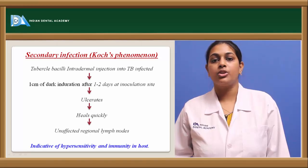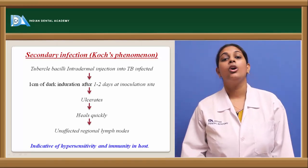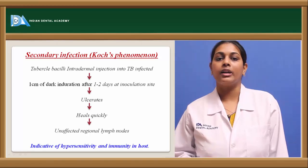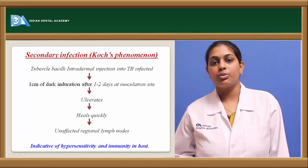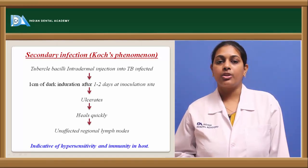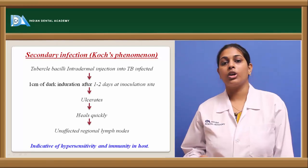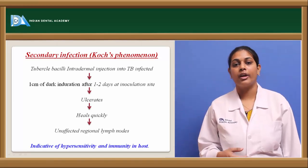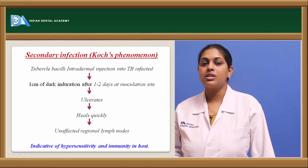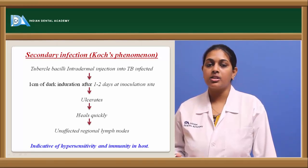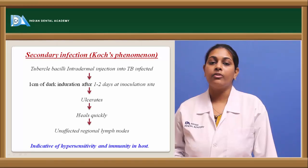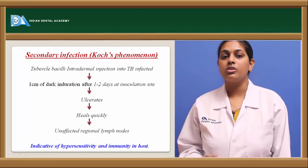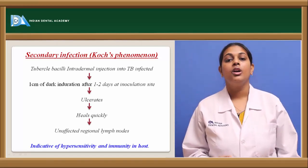Coming to secondary infection, also known as Koch's phenomenon: when tuberculosis bacillus was injected intradermally in already previously infected patients, there was one centimeter of dark induration occurring just one to two days after injection of tuberculin, unlike primary infection. At the inoculation site — most commonly the forearm area — there was this dark induration, followed by ulceration. Healing in secondary infection was quick compared to primary infection, and the regional lymph nodes were not affected.